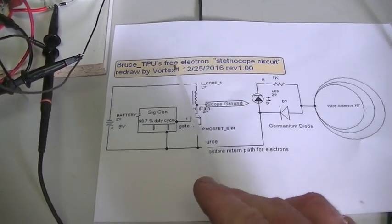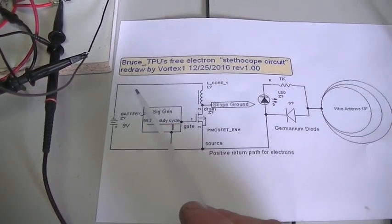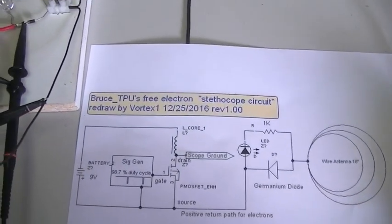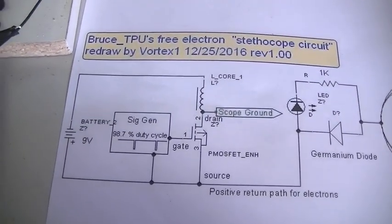So here's my replication attempt of Bruce TPU's free electron stethoscope circuit as redrawn by Vortex 1 from overunity.com. That is the circuit there.